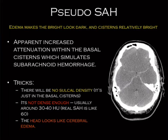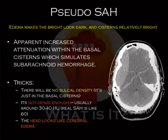If you have enough hemorrhage to make it look like blood outlining the basilar cisterns, you should also see hemorrhage in the sulci. So look at the sulci. First, look at your multiple choice options — if pseudo-SAH isn't one of them, don't get hung up on it. If it is a possibility, the pseudo-subarachnoid hemorrhage isn't dense enough: real SAH measures around 60 Hounsfield units, while pseudo-SAH measures around 30 to 40.